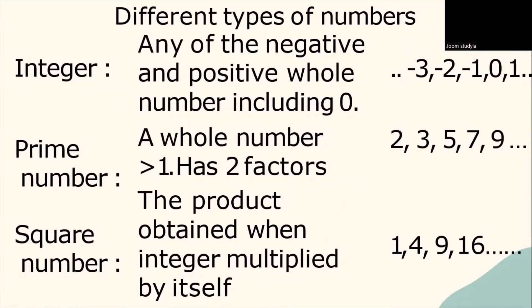What is integer? Integer is any of the negative and positive whole numbers including 0. Example: you might have negative 4, negative 3, negative 2, negative 1, 0, 1, 2 and so on.